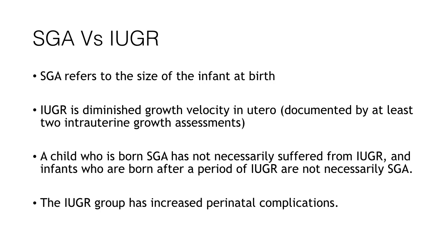The majority of practitioners use SGA and IUGR or low birth weight interchangeably, as synonymous with each other, but they are not synonymous. SGA means it is the size of the infant at birth. IUGR, as the name denotes, is intrauterine growth restriction — it is the diminished growth velocity inside the uterus, and should be documented by at least two intrauterine growth assessments. A child who is born SGA need not necessarily have suffered from IUGR, and an infant who experienced a period of IUGR is not necessarily SGA.